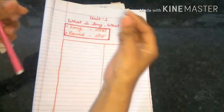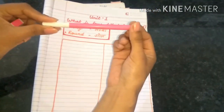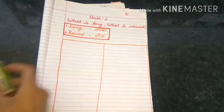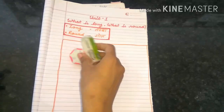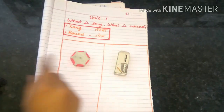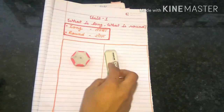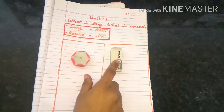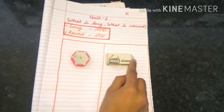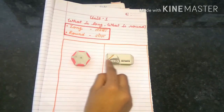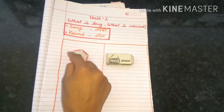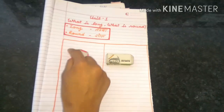Long means lumbar and round means goal. Now I have these two erasers. You can see both are erasers, but this eraser is long and this is round.